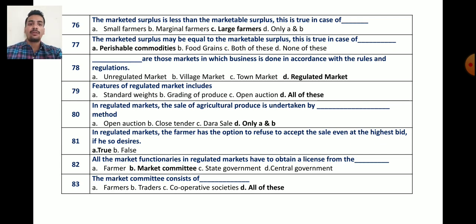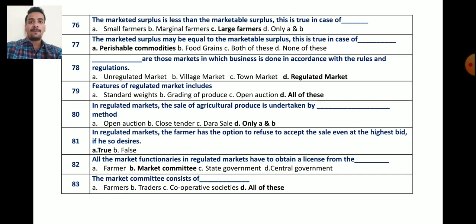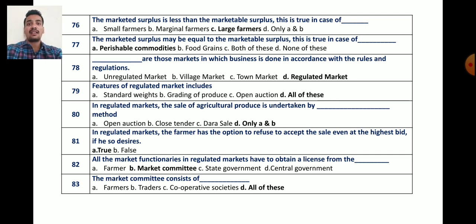Question number 81: in regulated market, the farmer has the option to refuse to accept the sale even at the highest bid, if he so desires. This statement is true. Keep in mind, if the farmer does not want to sell his produce, he can refuse even if he gets the highest bid or highest price.